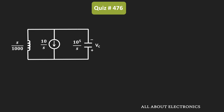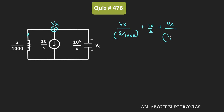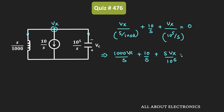In this circuit, by applying KCL we can easily find the voltage across the capacitor. Let the voltage at this node be Vx. Applying KCL at this node: Vx divided by (S/1000), plus 10/S (the current source), plus Vx divided by (10⁵/S) should equal 0. Simplifying: 1000·Vx/S + 10/S + S·Vx/10⁵ = 0, which gives Vx × (1000/S + S/10⁵) = −10/S.